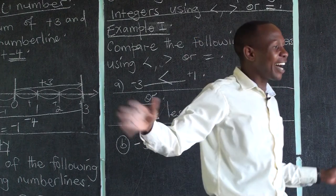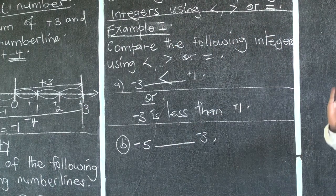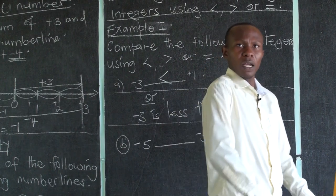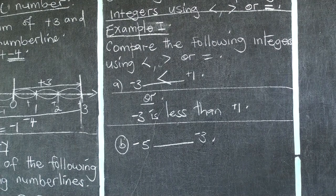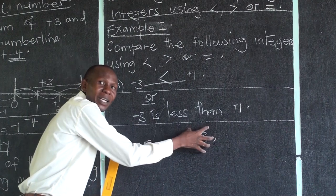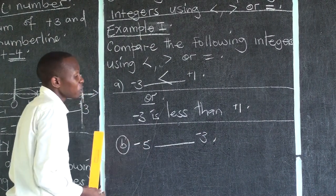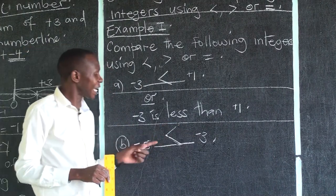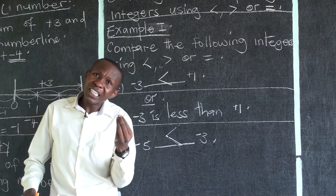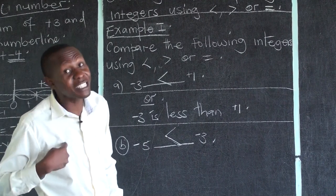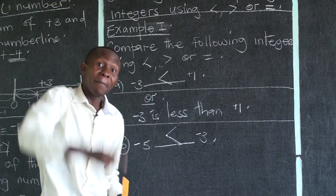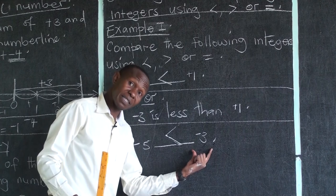When you pay your three millions you are set free and you become the boss. But when I pay three millions they still demand two more millions from me. So negative three millions is greater than negative five. In actual sense: negative five is less than negative three.